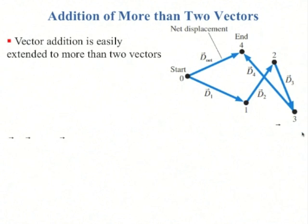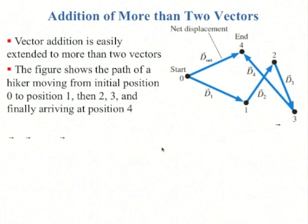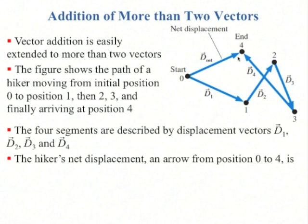If you want to add more than two vectors, it's easy to do this with the tip-to-tail method. Say you have a hiker that walks d1, then d2, then d3, then d4. We connect them all tip-to-tail, and we end up with the net displacement, written as d1 plus d2 plus d3 plus d4.